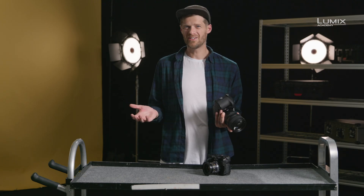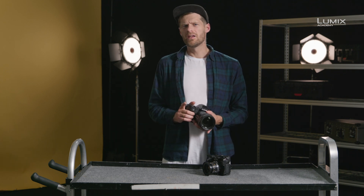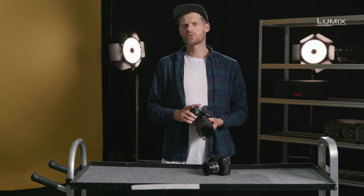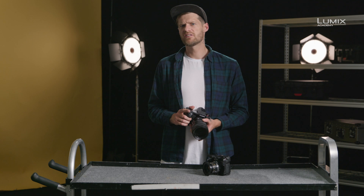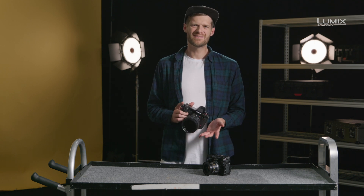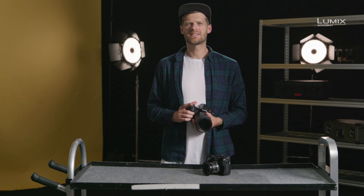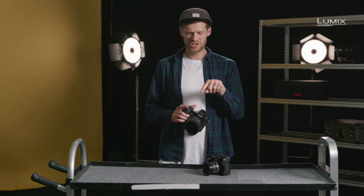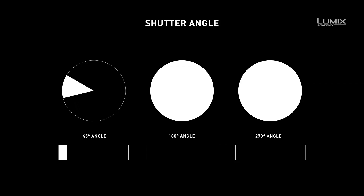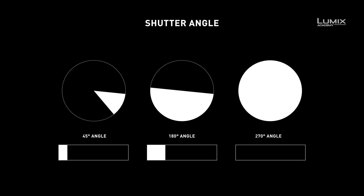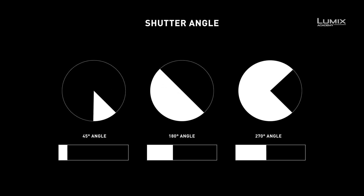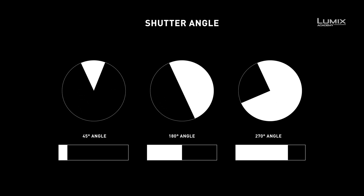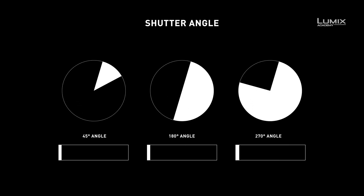Why angle? Why not seconds? Shutter angle is a way of describing the shutter speed relative to the frame rate. The term is now a bit outdated in use and harks back to the time when cameras had rotary shutters, where a disc with an angled opening would spin and let in light once per revolution to expose each individual frame.